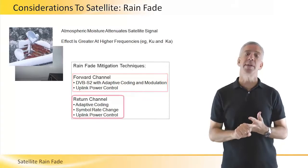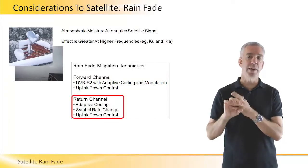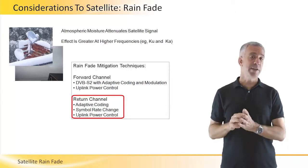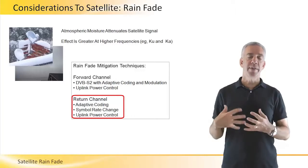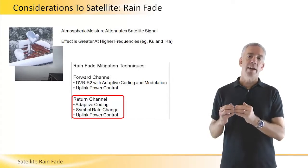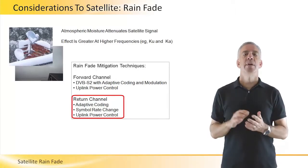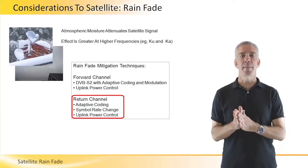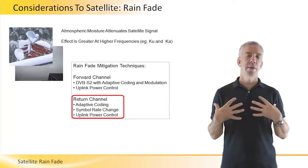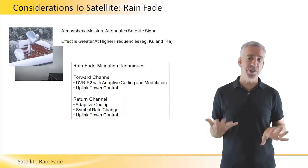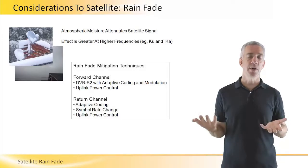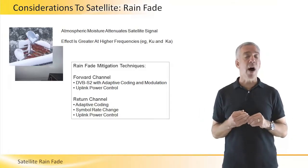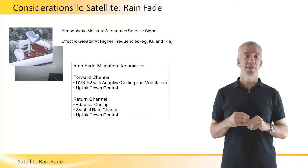We can do similar things on the return channel. Most specifically, we can do adaptive coding. We can also change the return channel symbol rate, and we can increase the uplink power available at the remote. This suite of rain fade mitigation techniques enables us to typically provide 99.5 or 99.7 percent availability.